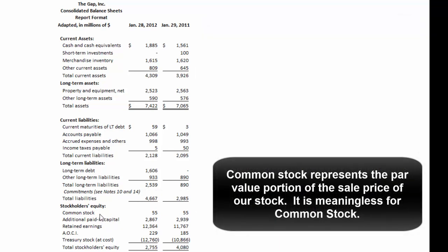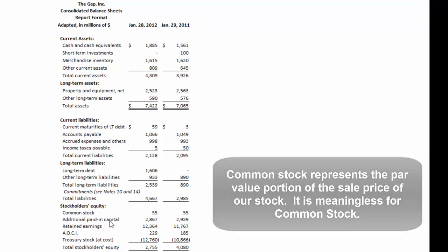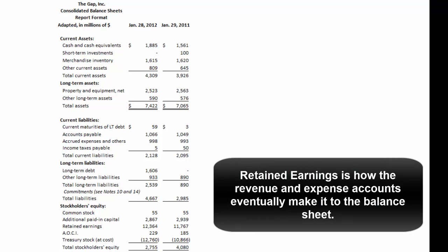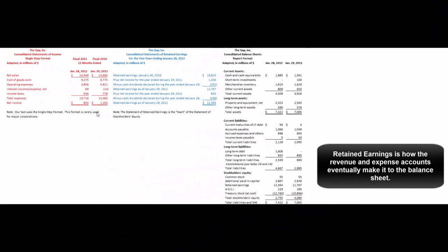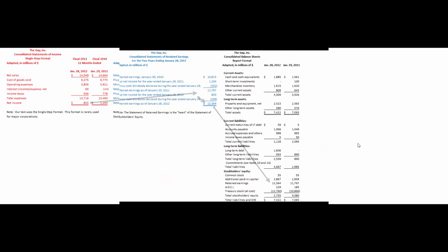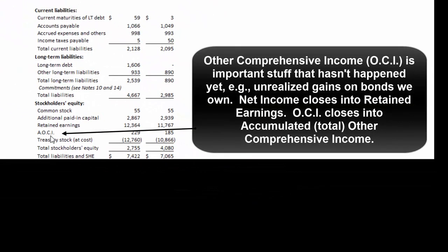The stockholders' equity section has common stock — that's the par value, which is essentially meaningless. Additional paid-in capital is the money shareholders paid above that par value. Retained earnings: beginning balance plus net income minus dividends gives retained earnings at the end — that's how these statements articulate and relate to each other. AOCI is accumulated other comprehensive income: important events that haven't been realized yet, like unrealized gains on bonds we still own. Just as net income closes into retained earnings, other comprehensive income closes into AOCI. Treasury stock is when the company buys back its shares, perhaps to raise the stock price or increase earnings per share.